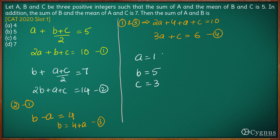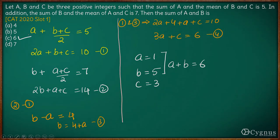So the question is find the sum of a and b. The sum of a and b, that is a plus b, is 6. So the answer to this question is option c, 6. That is it for this question. Thank you.